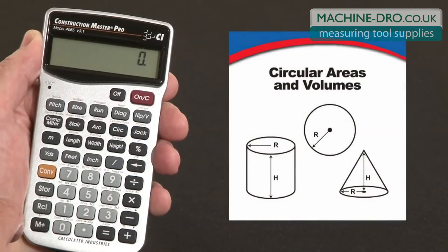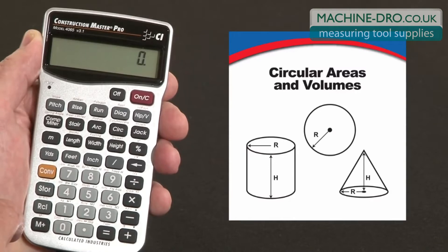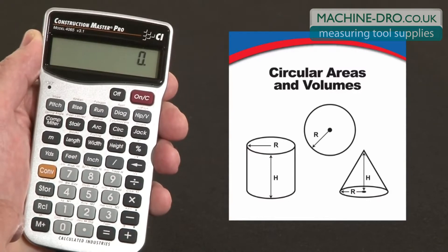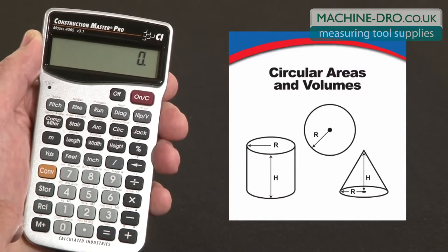Now let me show you how to calculate circular areas, volumes, and arc lengths on the Construction Master Pro. Keep in mind, if you're using the trig model or the desktop model, the keystrokes are exactly the same. This feature is great for circles, columns, sonotubes, arched openings, or really anything round.